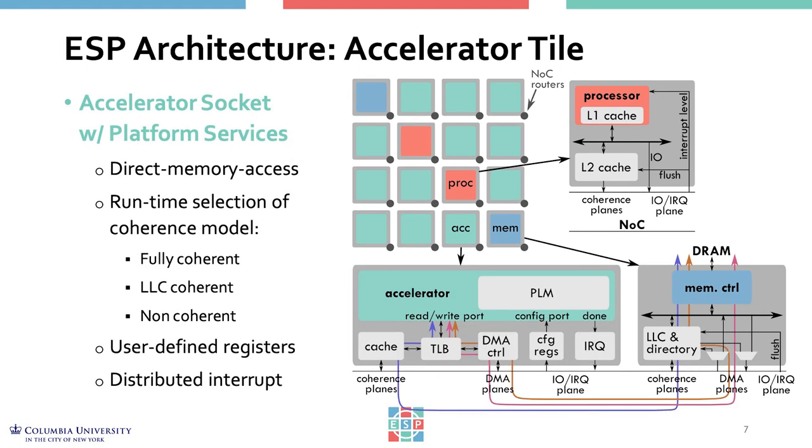The accelerator tile contains specialized hardware implementing a loosely coupled accelerator that executes a coarse-grained task, operating independently from processors — though configured by them and accessing data allocated by them. Typically it exploits DMA, but coherent communication with main memory is also possible. The accelerator tile sits inside a socket, which encapsulates the tile and plays two roles: it decouples the design of the tile from all other components in the system, and it provides a set of platform services that the accelerator can rely upon.